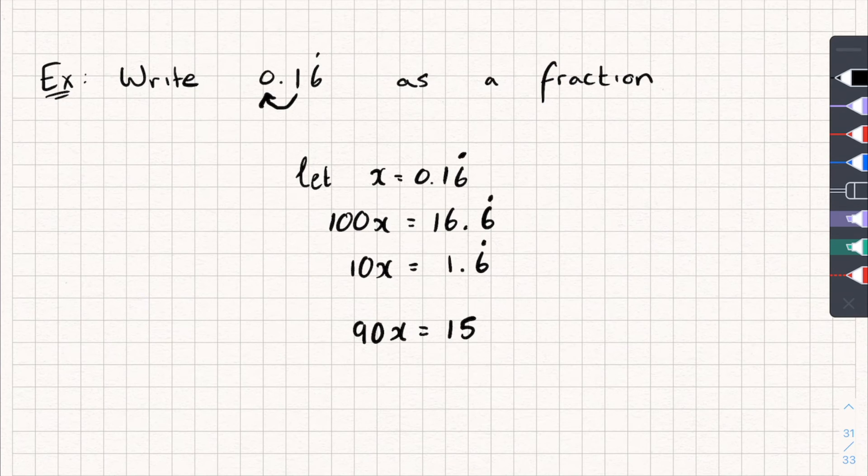And from here, I can divide both sides by 90. And we get x is equal to 15 over 90, which can be simplified to 1/6, I think. And there we go, we've done it. We've got x is equal to 1 over 6. And x is also equal to 0.16 recurring. So 1 over 6 is equal to 0.16 recurring.